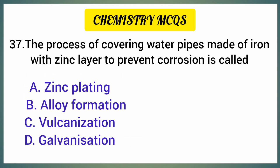The process of covering water pipes made of iron with a zinc layer to prevent corrosion is called — correct option is option D: Galvanization.